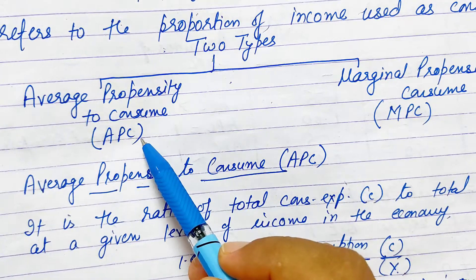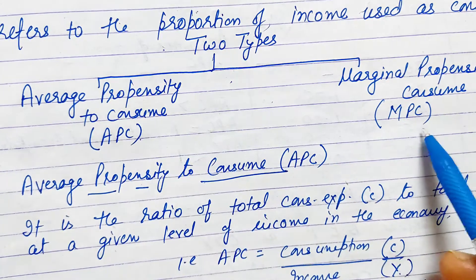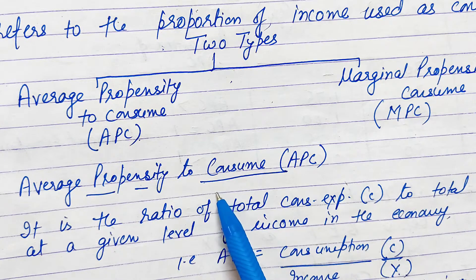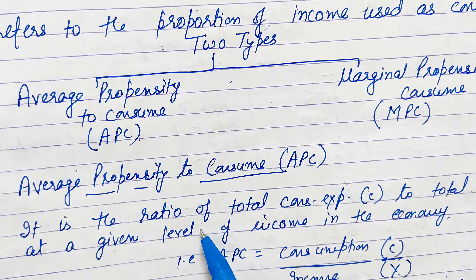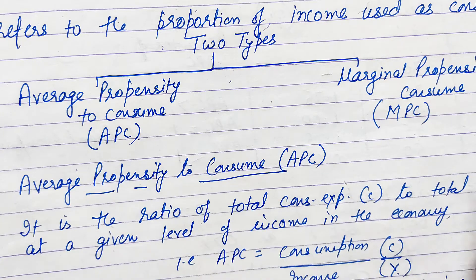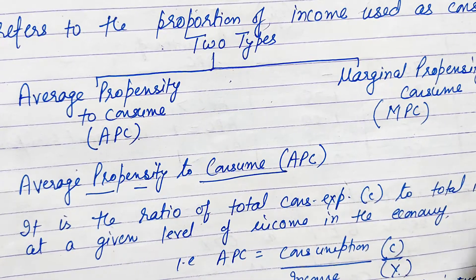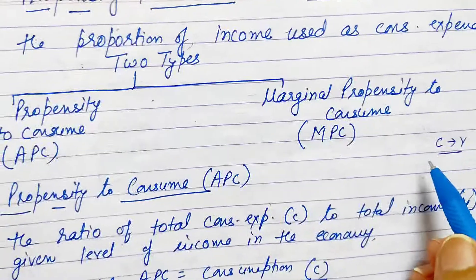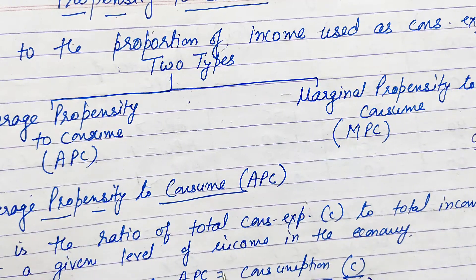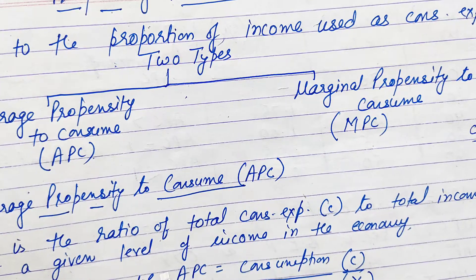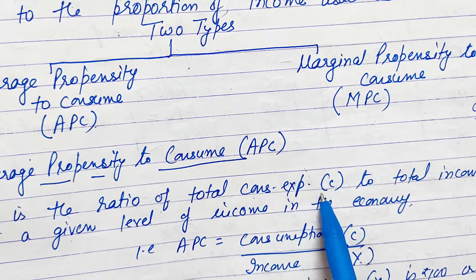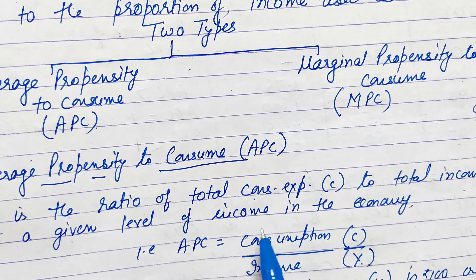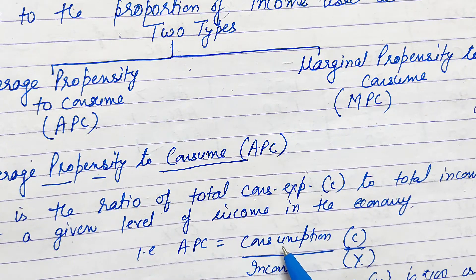One is called as average propensity to consume and the second is called as marginal propensity to consume. Average propensity to consume is denoted as APC and the second one is MPC. Now first we will discuss about the average propensity to consume. APC is a ratio — the ratio of the total consumption expenditure to the total income in the economy at a particular level of income.